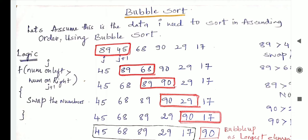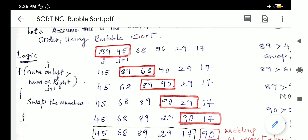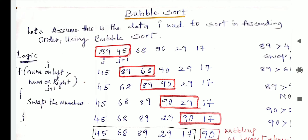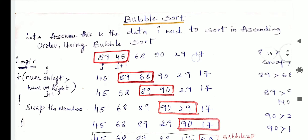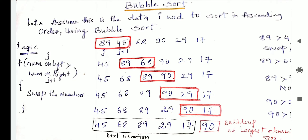And 17. So what are we going to do in bubble sort? This concept is very simple. We are going to compare the left element — let us call it j — with j plus 1. I am going to scan this set of elements from left to right, starting from 89 up to 17. When I start scanning, I compare element 89 with 45. The logic is simple: the left number is compared with the right number. If it is greater, interchange their locations.